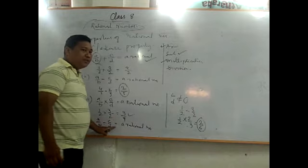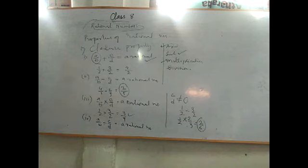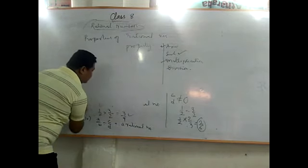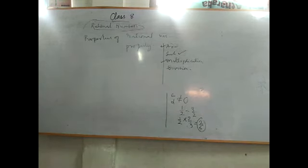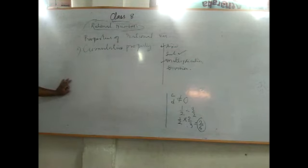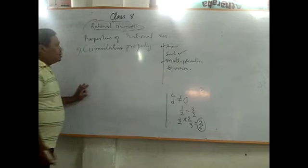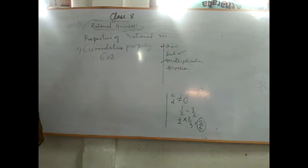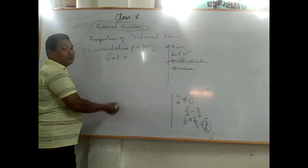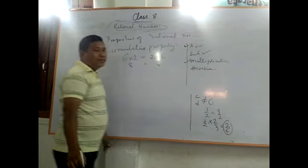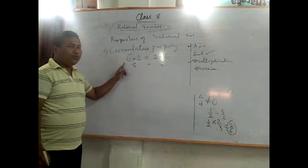Now, the second property is the commutative property. Before going to the commutative property for rational numbers, recall that for natural numbers, 6 plus 2 equals 2 plus 6, both giving 8. Now we will see the commutative property applied to rational numbers.